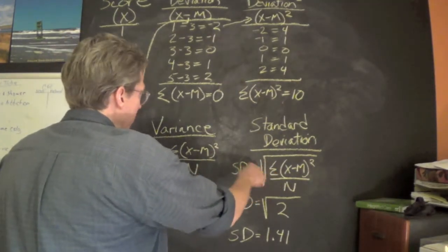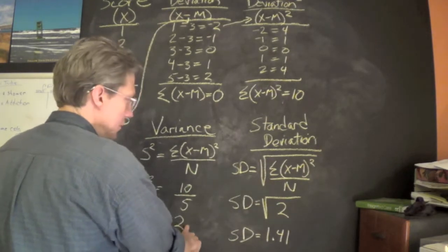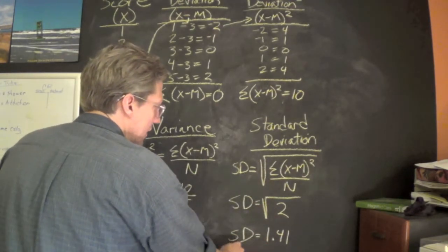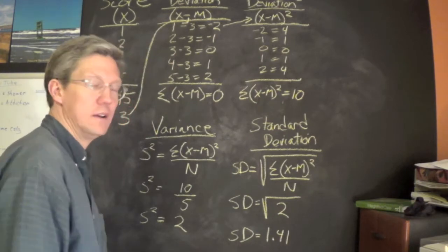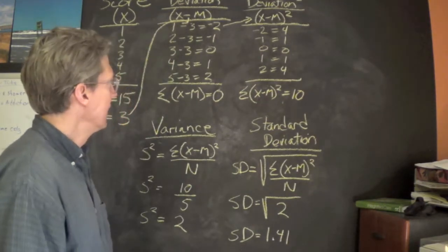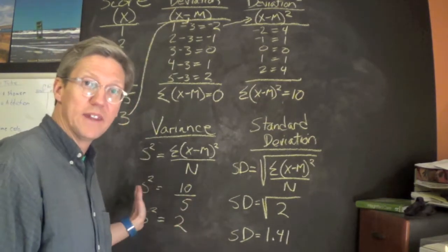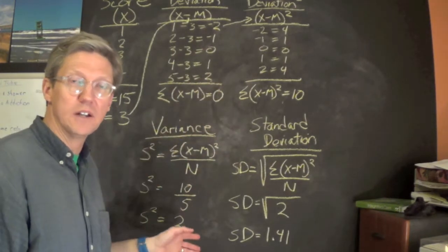We just take the square root of this, which we knew was two. We calculated it and we get a standard deviation of 1.41. Now we'll look and see what that means for us in terms of the normal distribution.